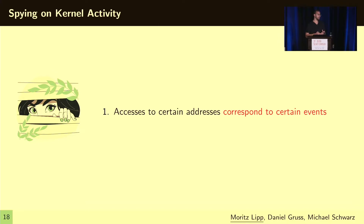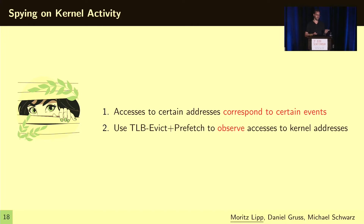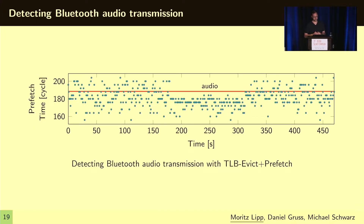The same principle can be applied to many other scenarios. Using TLB Evict+Prefetch, we can monitor certain addresses that correspond to certain kernel events and basically observe any accesses from the kernel. In this use case, we detected whenever the Bluetooth audio module played audio to the headphones — and we can clearly see in our measurement when audio is played and when it is not.